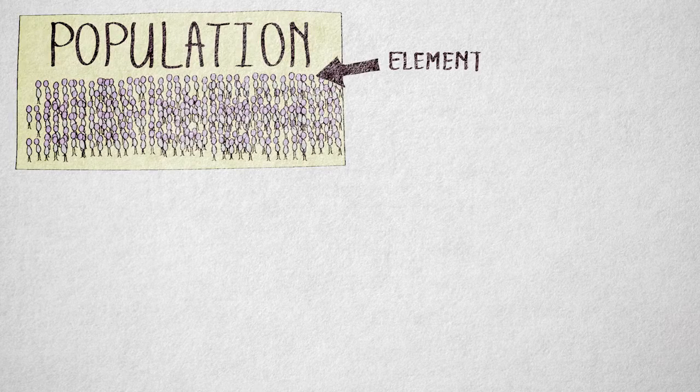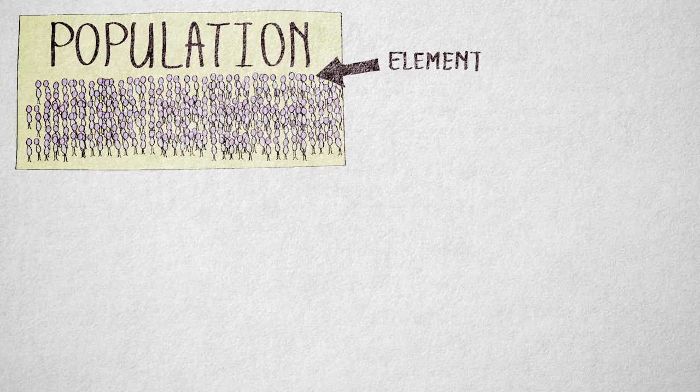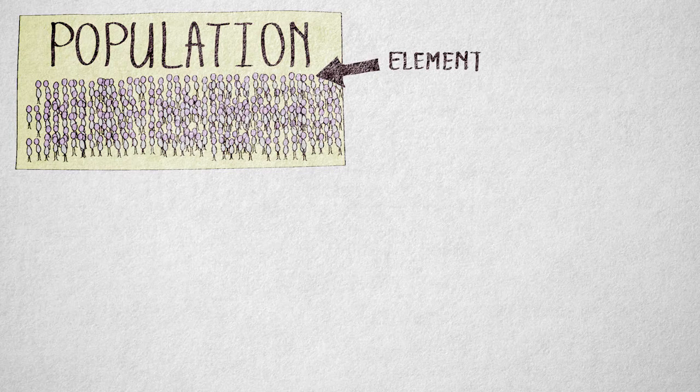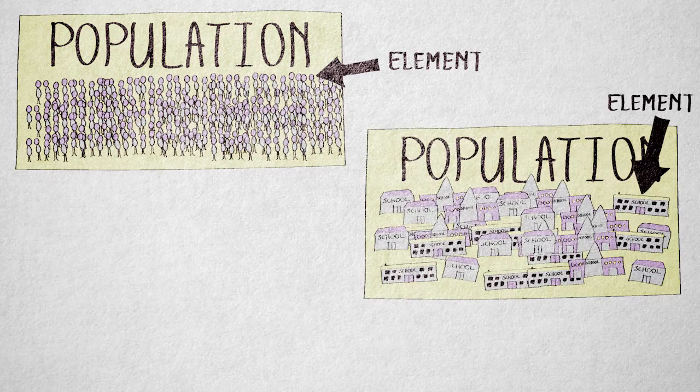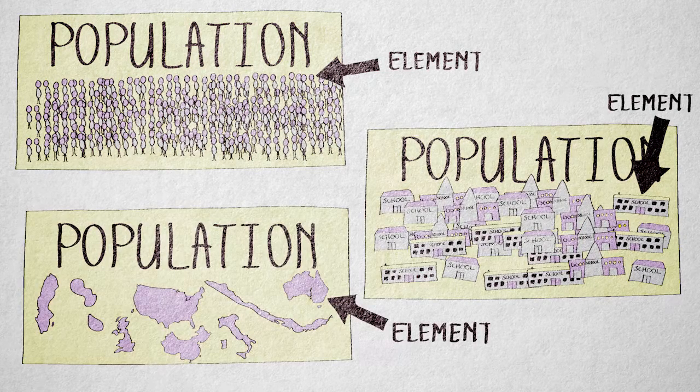An element, or unit, is a single entity in the population. Together, all the elements form the population. An element most often consists of one person, but of course it depends on your hypothesis. An element can also be a group, a school, a city, a union, a country, you name it.